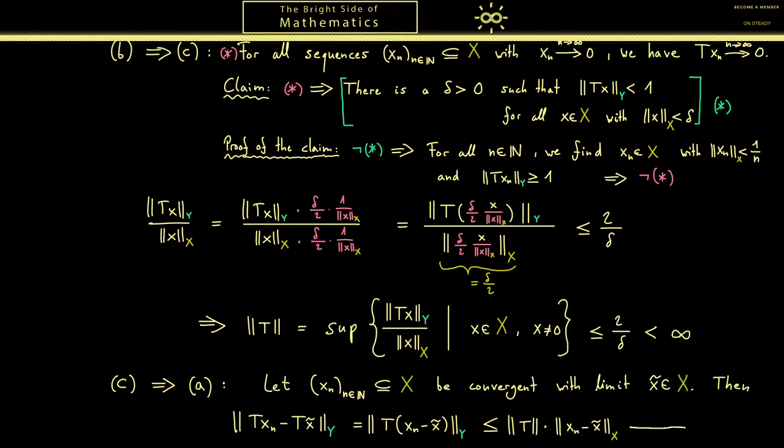So the whole right hand side goes to zero. Hence also the left hand side, which tells us that also the images converge. And that's by definition the continuity, so our proof is finished.